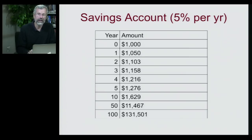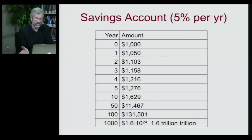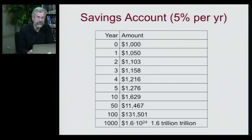Now imagine an ancestor who put $1,000 into a bank account for a descendant a thousand years from now, at 5% growth for that whole thousand years. Do you know how much that would be worth? An enormous number: 1.6 trillion trillion dollars — more money than has ever existed on this planet. So even a 5% growth rate is impossible to sustain over an extended period of time.